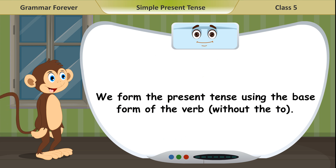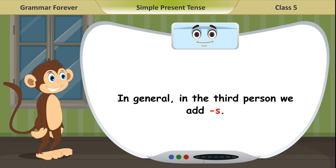We form the present tense using the base form of the verb without the 'to'. In general, in the third person we add S.